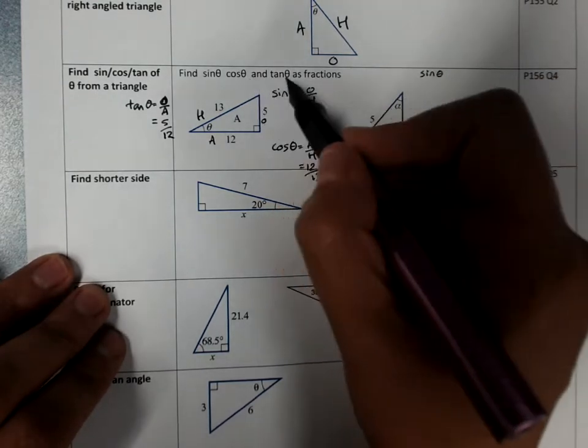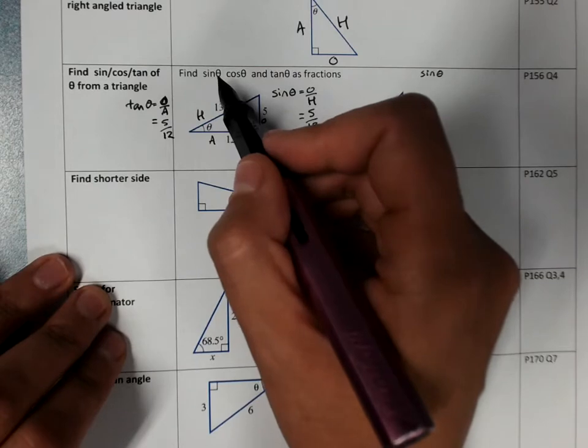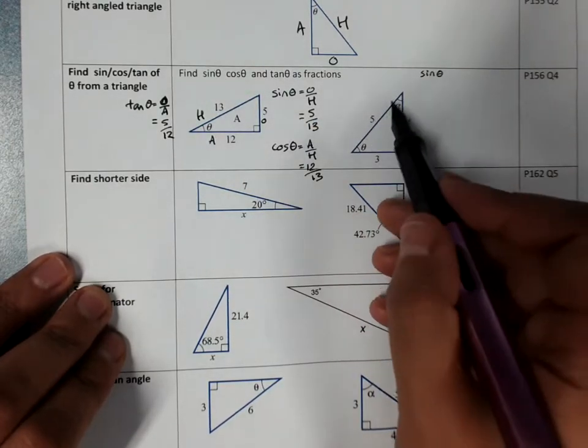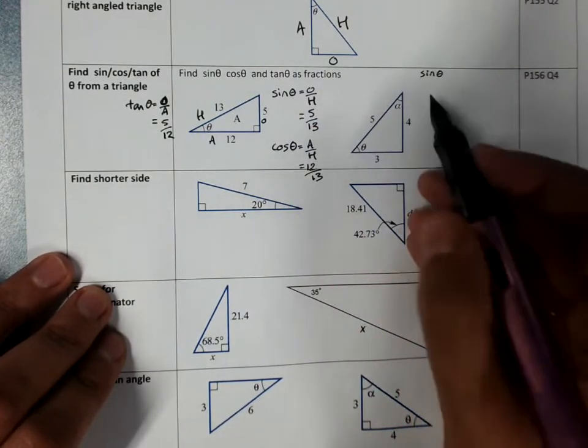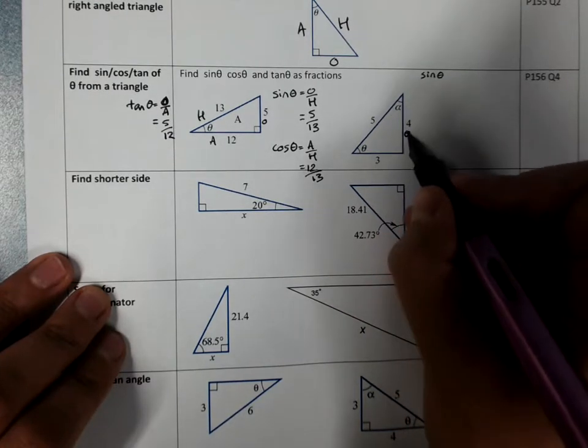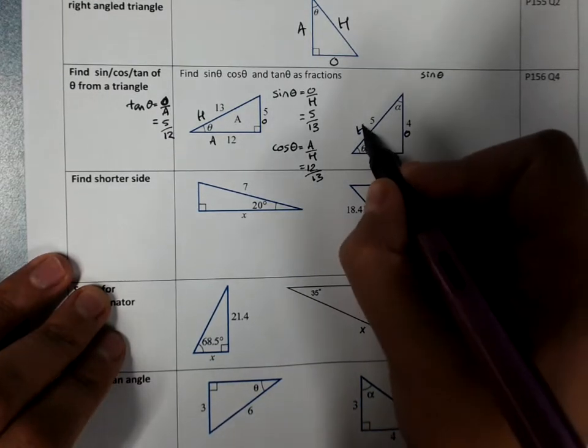Label the angle now. We're finding sine of theta, not sine of alpha. So this is the angle that we care about. We're going to label opposite, adjacent, and hypotenuse.